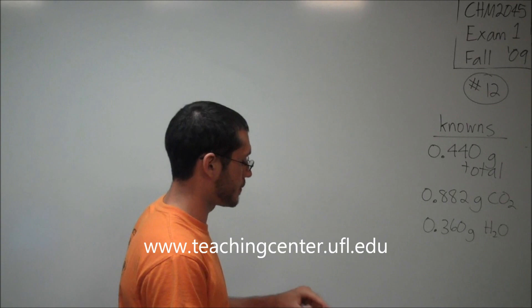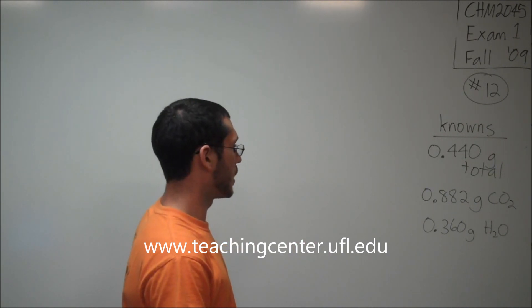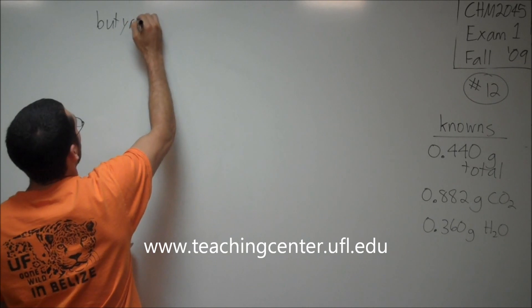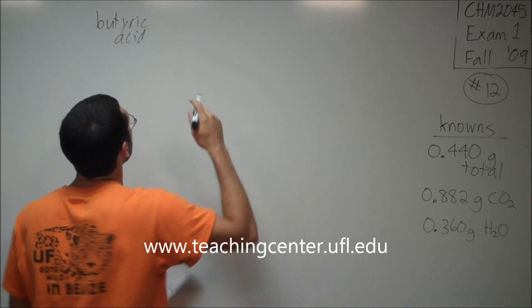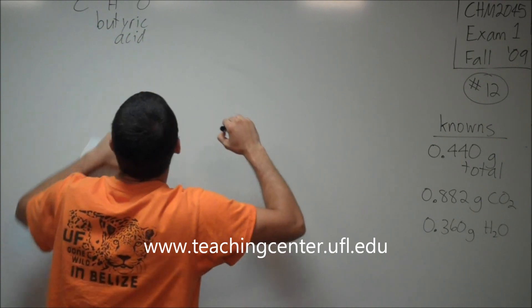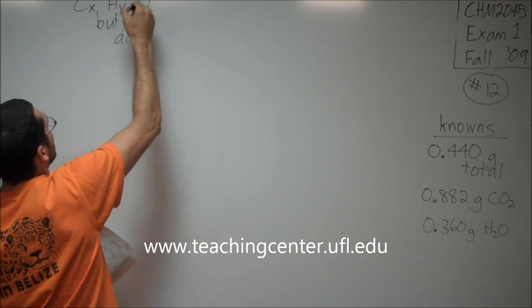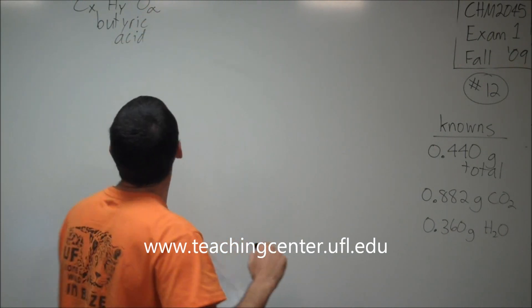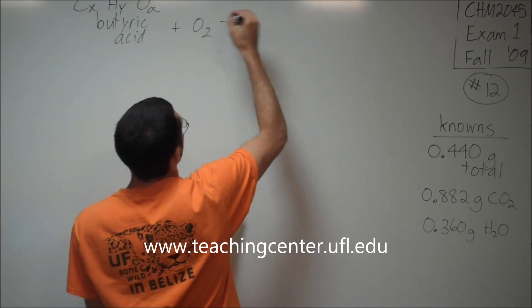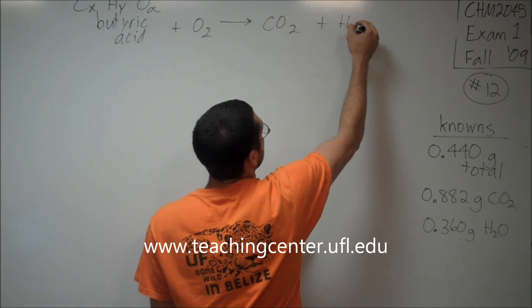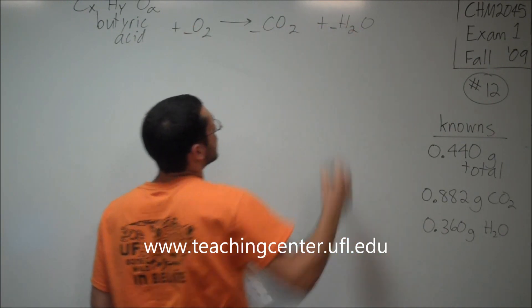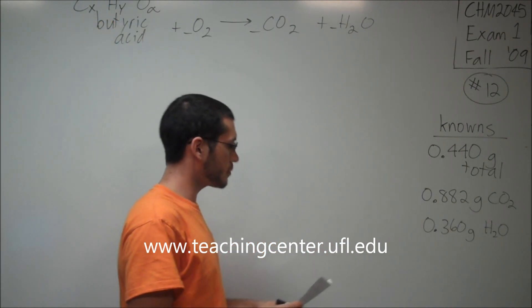In order to find the empirical formula, we need to see what's happening. So let's take butyric acid. We don't know the molecular formula right now. All we know is that it consists of carbon, hydrogen, and oxygen, but we don't know in what ratios. So let's just call it X, Y, and alpha. And then we'll react it with oxygen, because we're combusting the butyric acid. Then this will yield CO2 and H2O. We have to approach it a different way.